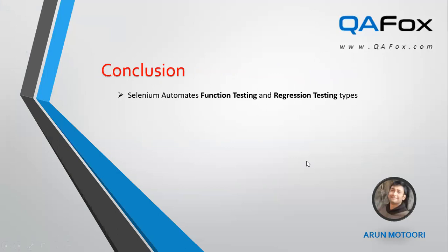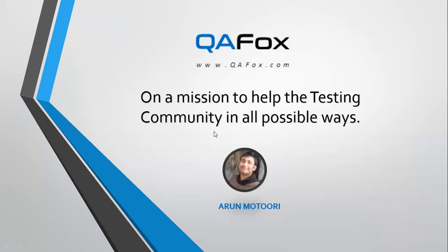In conclusion, Selenium automates functional testing and regression testing types. The straightforward answer is: Selenium is a functional test automation tool that can automate functional testing and regression testing. Under functional testing, it covers smoke testing, sanity testing, UI testing, database testing, cross-browser testing, and more. That's all about the different testing types that can be automated with Selenium. This is Arun Motori from qafox.com — our mission is to help the testing community in all possible ways. Thank you, signing off.